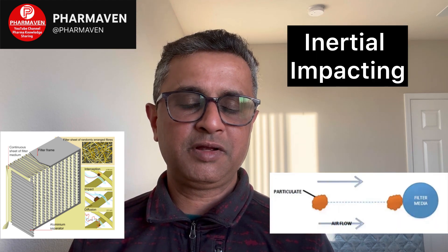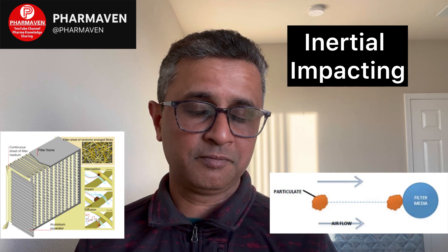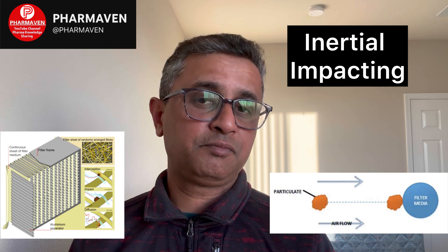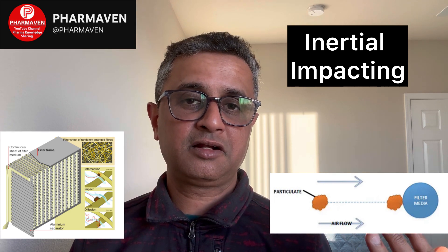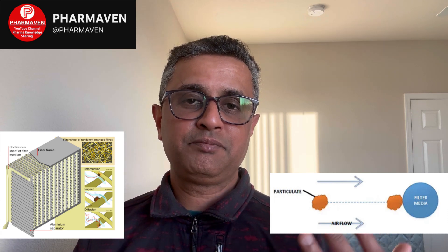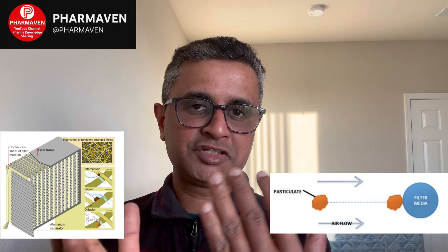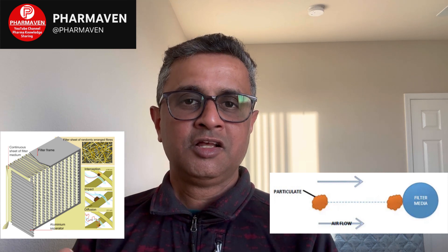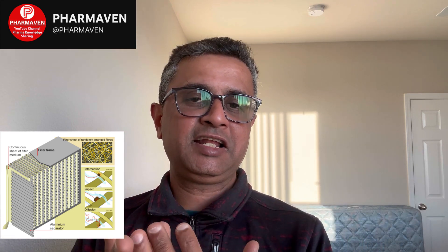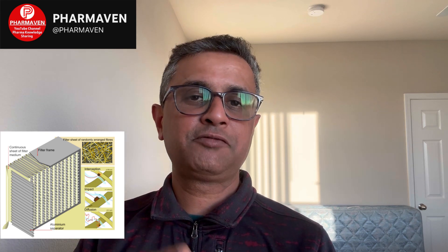The second mechanism is inertial impaction. When particles around 0.3 micron travel through the air at a certain velocity and impact the structure of the HEPA filter, they attach to the fibers because of that impact. Due to the velocity and impact, they get attached to the fibrous structure and do not pass beyond it — they get entrapped within the filter.